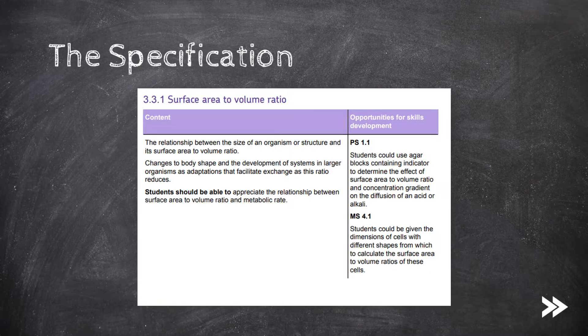Let's head straight to the specification. They want us to consider the relationship between the size of an organism or structure and its surface area to volume ratio, and then the adaptations of larger organisms to maintain a rate of exchange of materials despite a smaller surface area to volume ratio.